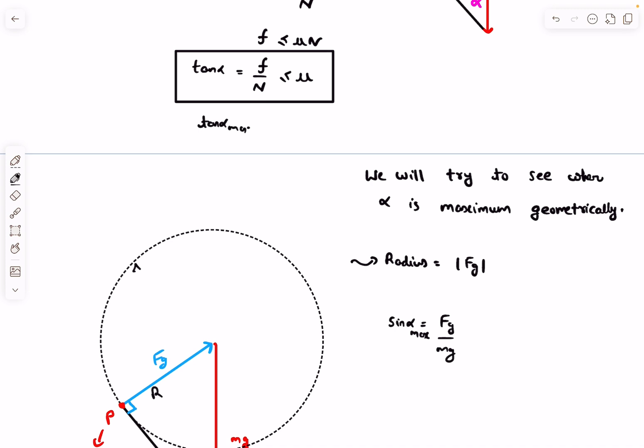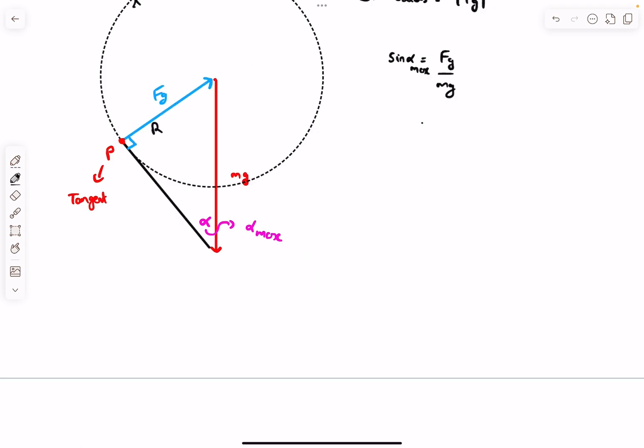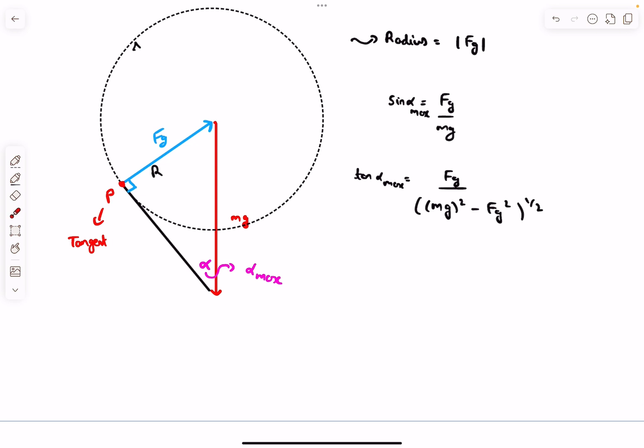We already know tan alpha maximum. Tan alpha max should equal μ, it shouldn't cross that. We can say tan alpha ≤ μ. Let's rearrange sine to get tan. Tan of alpha max equals Fg divided by the square root of mg squared minus Fg squared. From our FBD, this is the maximum possible value of tan alpha.